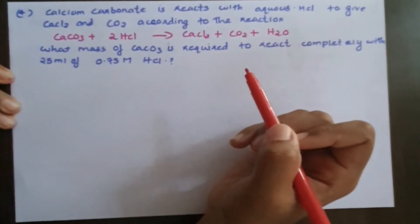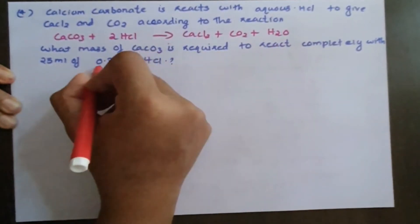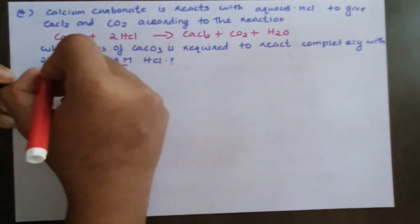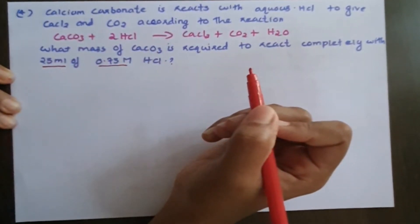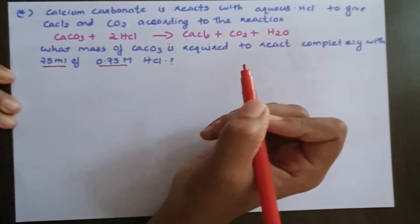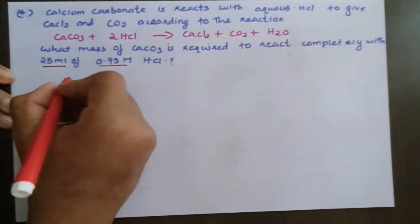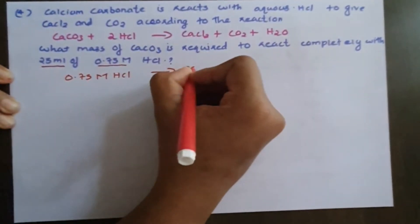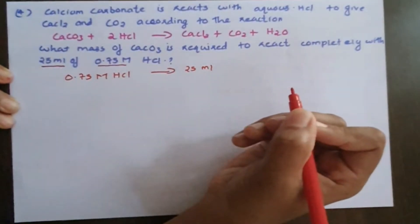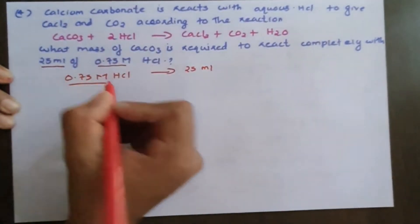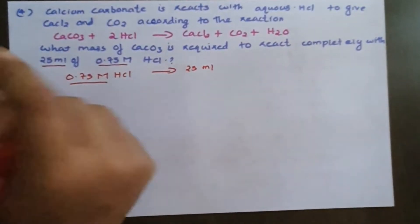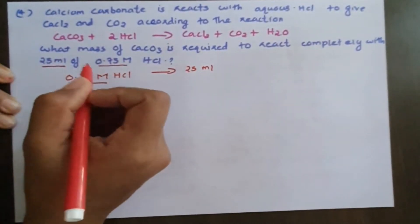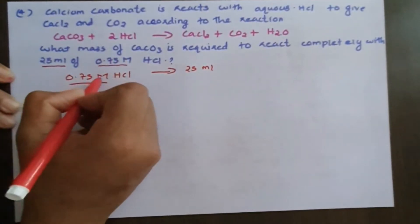We need to find the mass of calcium carbonate that will react with 0.75 molar HCl. It will be 25 mL of 0.75 molar HCl. 1 mL of solution contains 0.75 moles of HCl.